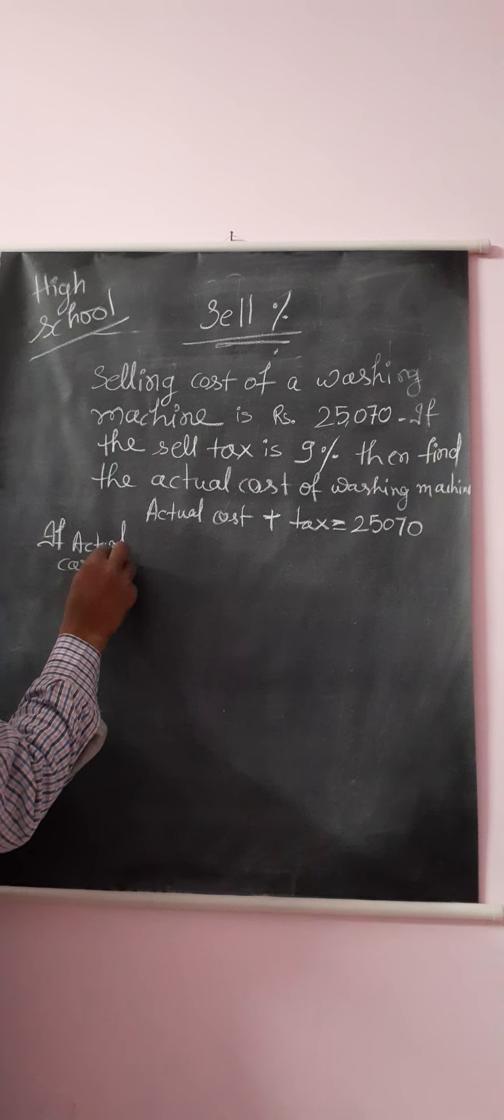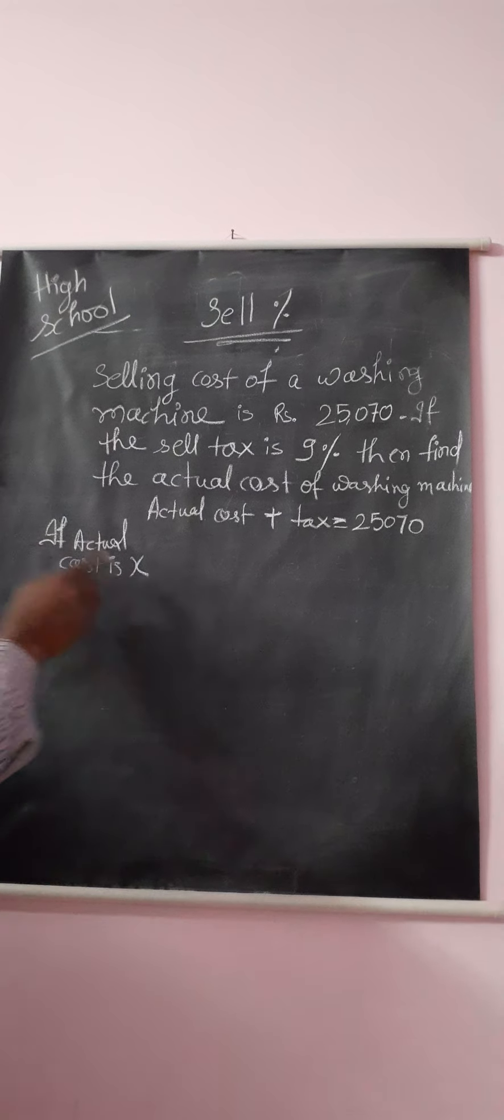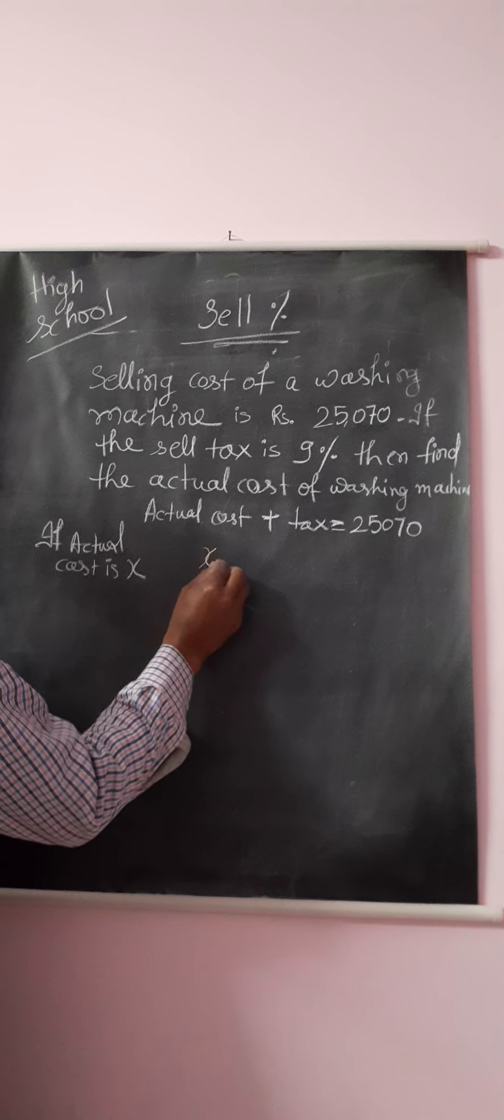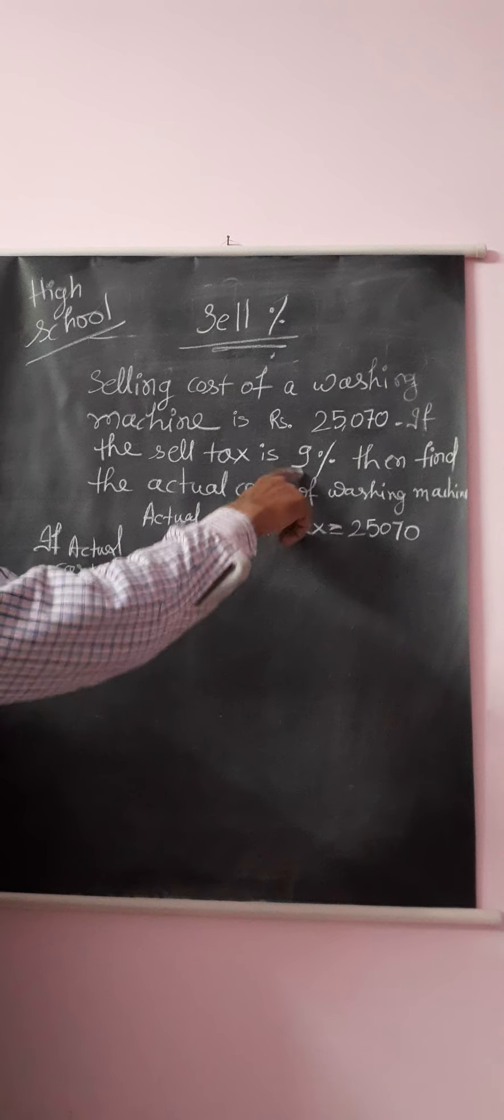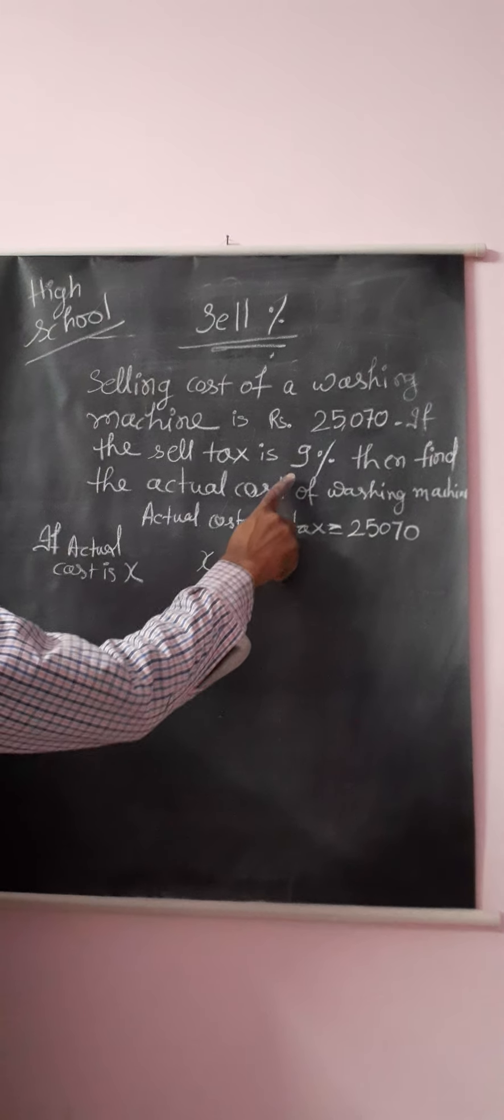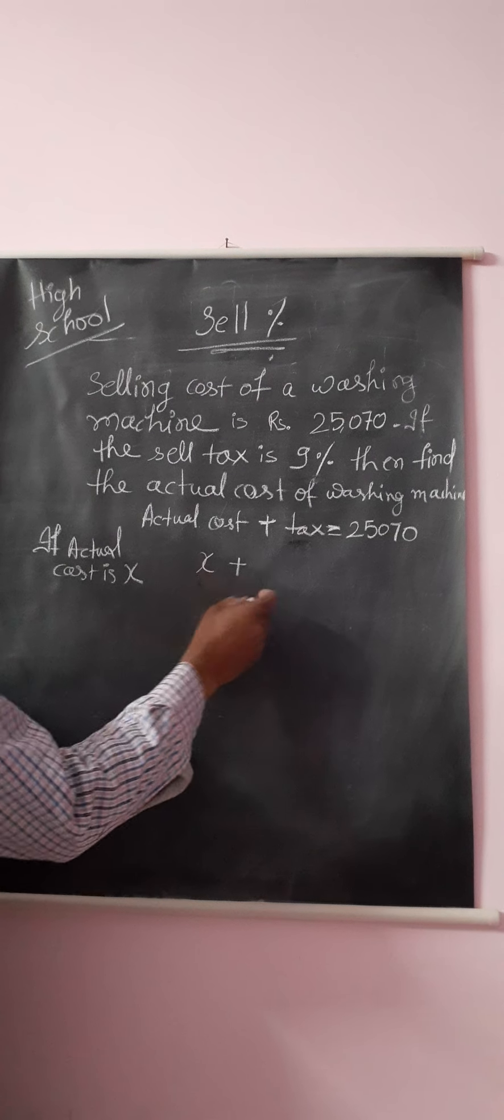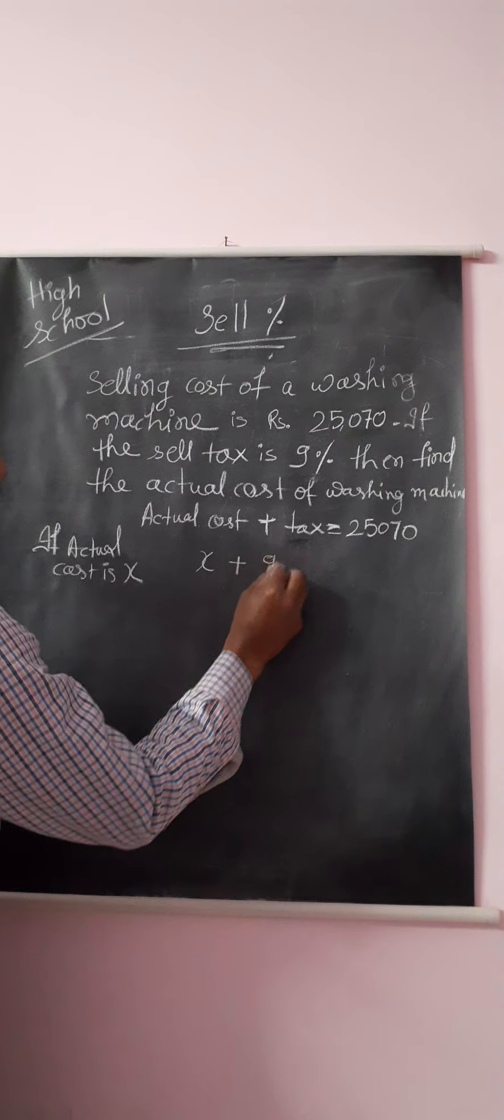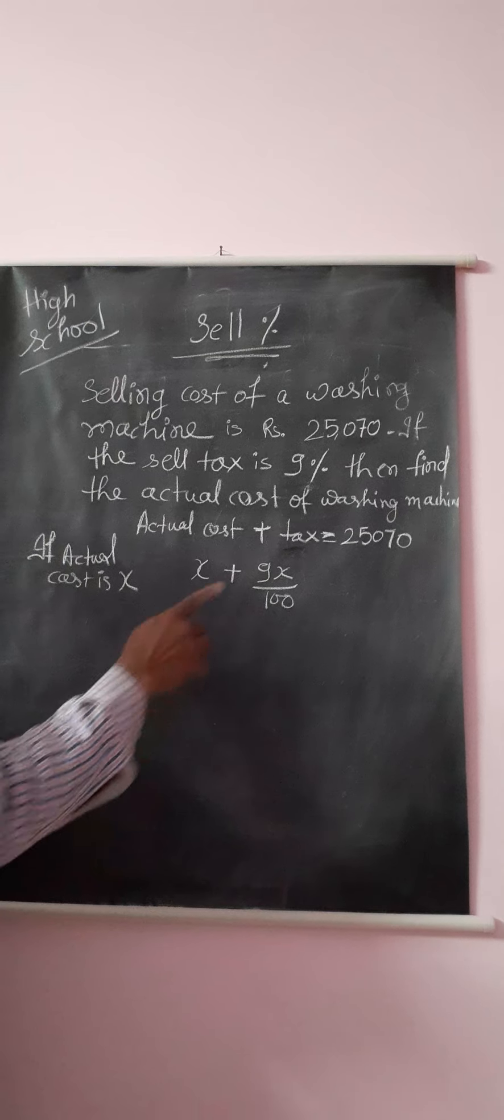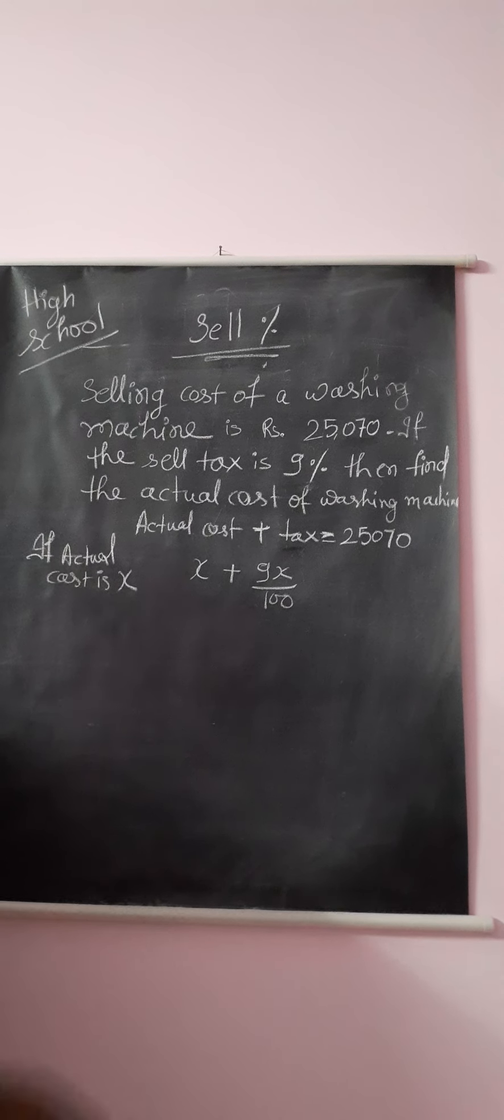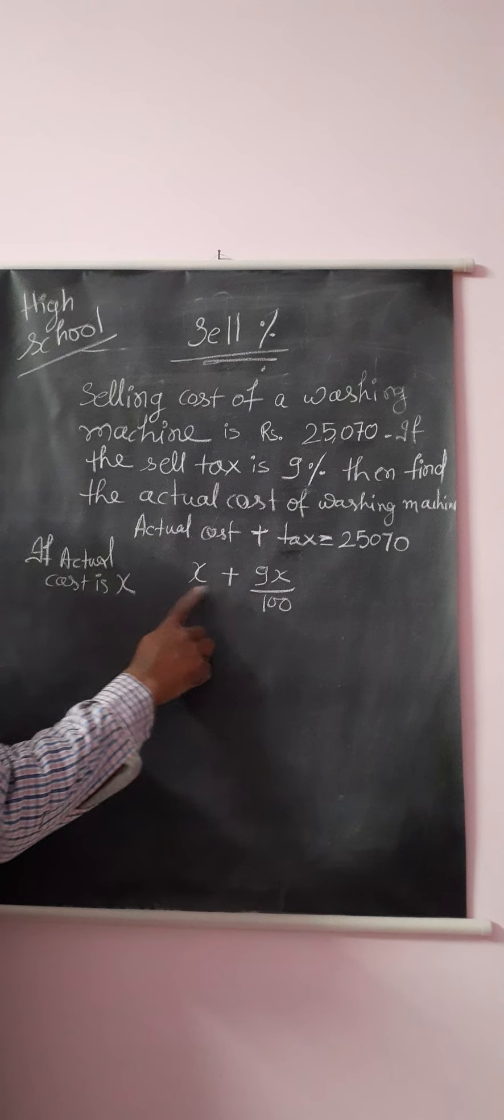If actual cost is x, then x plus how much is the tax? 9% of x. 9% of x means 9x upon 100. This is the tax part and this is the actual cost.